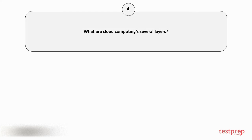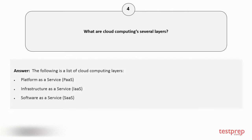Question number 4: What are cloud computing's several layers? The following is a list of cloud computing layers: 1. Platform as a Service (PaaS). 2. Infrastructure as a Service (IaaS). 3. Software as a Service (SaaS).